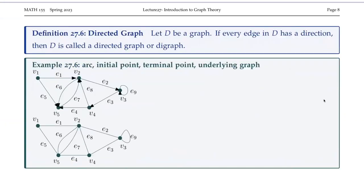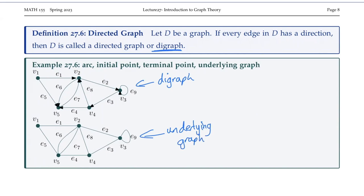The final bit of terminology today deals with directed graphs. Directed graphs are very similar to the graphs we've already met, but the big difference is that we have arrows, and these arrows show direction — that's why it's called a directed graph, also abbreviated to digraph. If every edge in our graph has a direction, then it is a digraph. We say that if we remove all those arrows, then this is called the underlying graph.